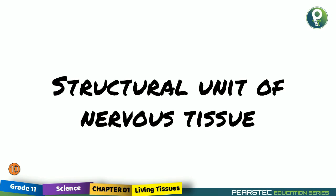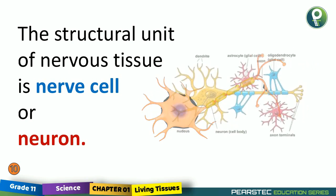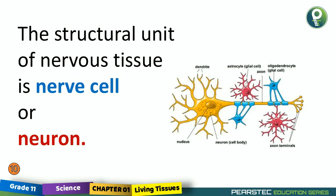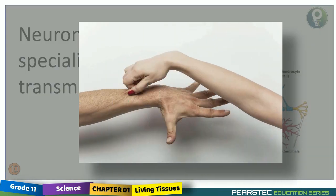Now let's understand the structural unit of nervous tissue. The structural unit of nervous tissue is the nerve cell, or neuron. Neurons are specialized to transmit impulses. Look at this person — he is getting pinched. If somebody is pinching you, what will happen? It will give pain, or you will take away your hand. Why? Because the impulses are getting transmitted and it pains, or you are avoiding the pain.